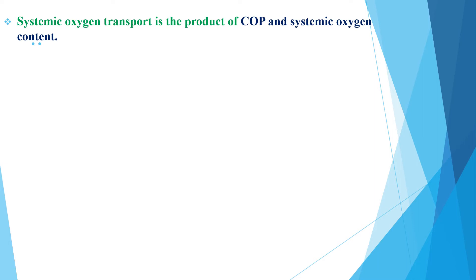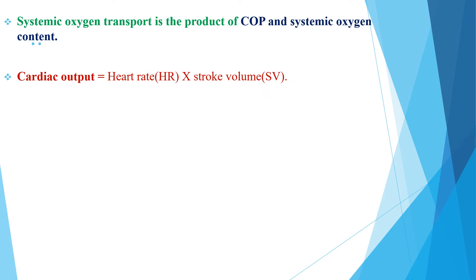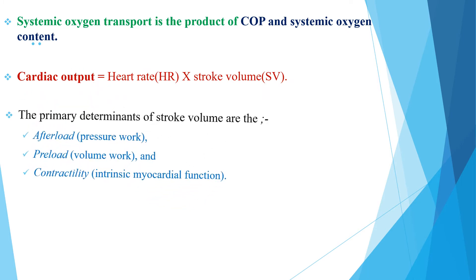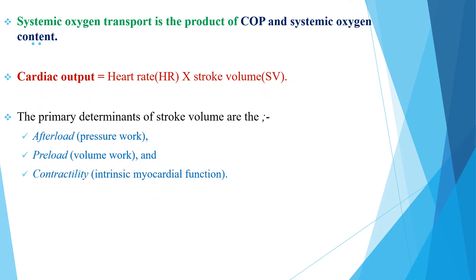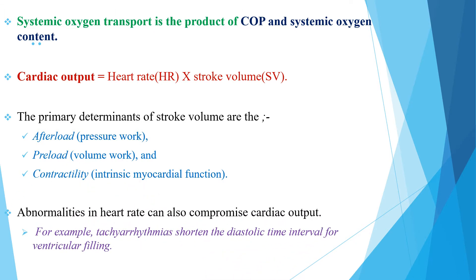Systemic oxygen transport is the product of cardiac output and the systemic oxygen content, and cardiac output is the product of heart rate and stroke volume. Stroke volume is affected by afterload, preload, and contractility, and abnormality in any of these can also compromise cardiac output. For example, tachyarrhythmia shortens the diastolic time for ventricular filling, by this mechanism causing decreased cardiac output.